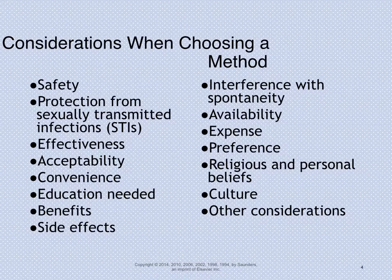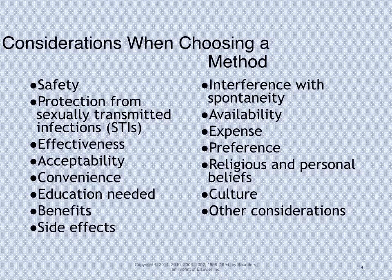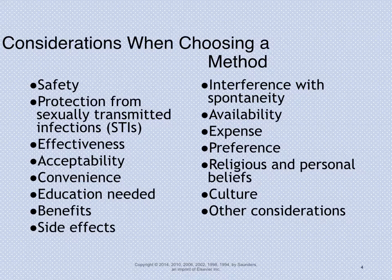Things to consider when choosing a method of contraception for our patients include safety, protection from sexually transmitted infections, effectiveness, and acceptability for the patient — even in a cultural or religious setting — making sure we're finding a method that fits their needs. We also want to look at side effects, benefits, availability, and expense, especially when working with patients who are low income. We want to talk about their preferences and any other considerations.